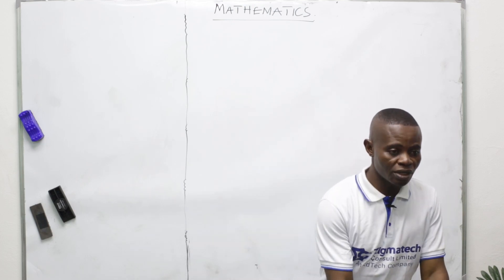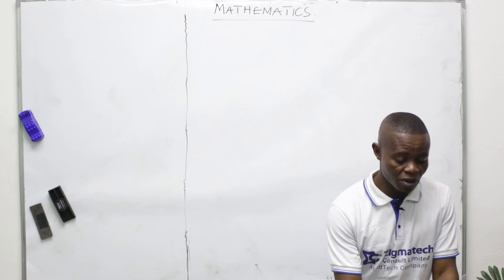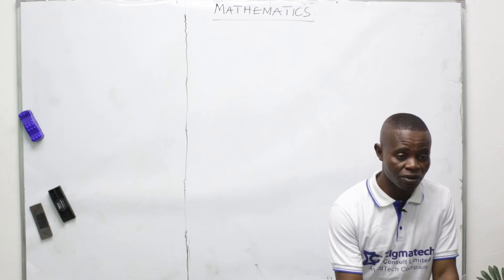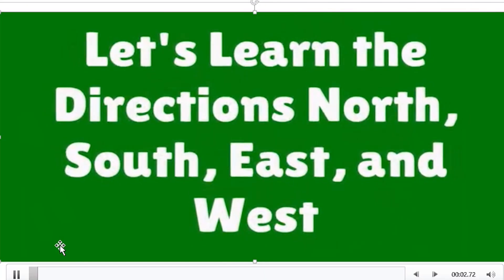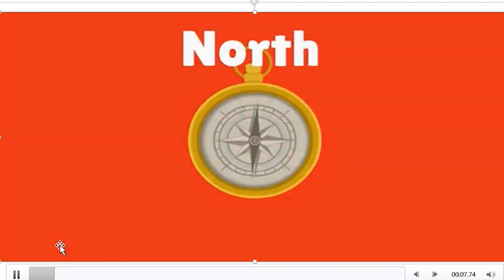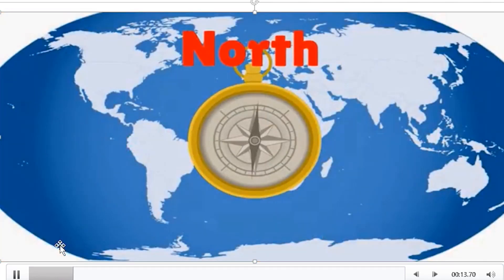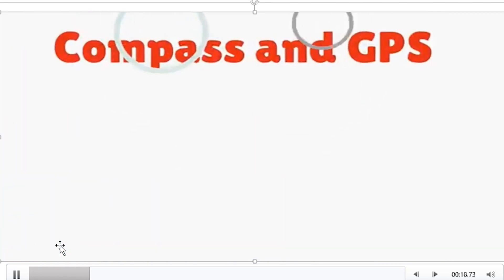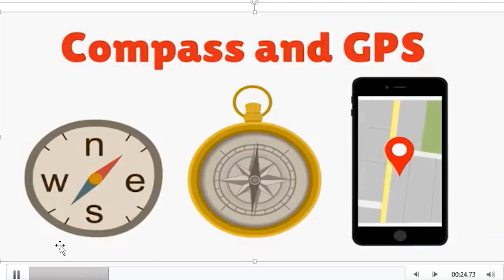Let's take a look at this short video before we proceed to the definition of bearing, distance, and types of bearing. Let's learn the directions: north, south, east, and west. You can also see the next diagram with the compass and GPS itself — north, south, east, and west.